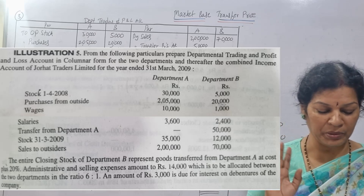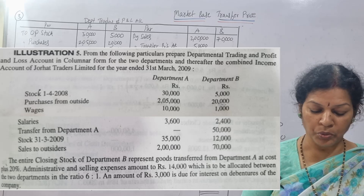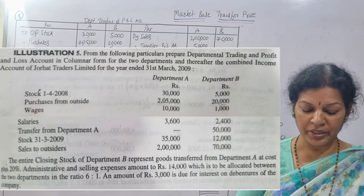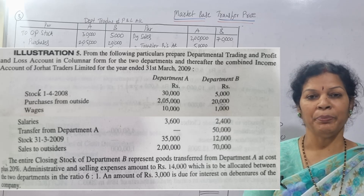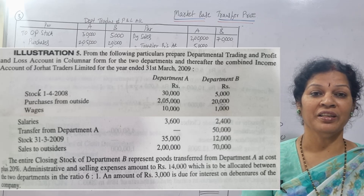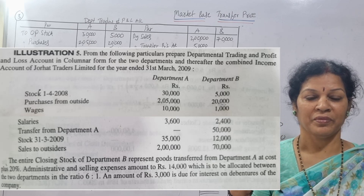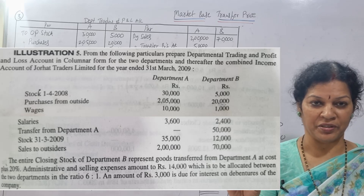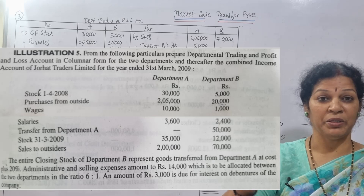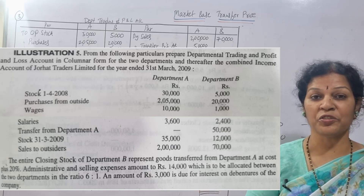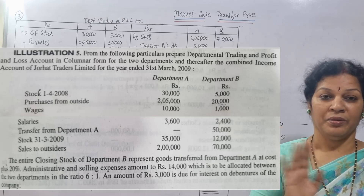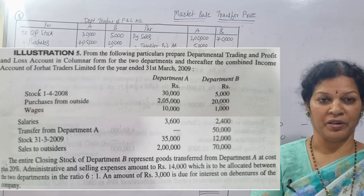Expenses given are 14,000 — no problem. Next, an amount of 3,000 is due for interest on debentures of the company. How to allocate that between A and B is not mentioned. Not mentioned means we'll open a combined profit and loss account. Net profit is transferred to the combined profit and loss account, and there we write 3,000 interest on debentures on the debit side. Also, the loading amount of 20% comes in the combined profit and loss account — please remember this point.